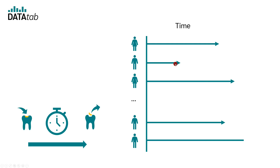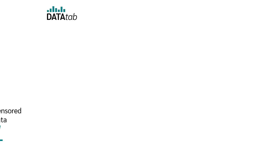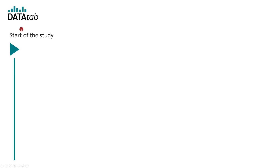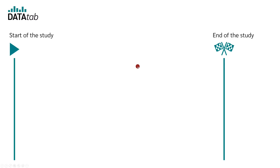The question will surely come up: what if the filling of a test person does not break out? Or what if the person moves away and changes dentist, so it is simply not known when the filling will break out? All these cases are summarized under the term censoring. A study cannot last forever — there's always a start and an end date because of limited resources and because you want to publish the results at some point. If a filling is inserted and then breaks out within this period, you have a valid case — the event has occurred.